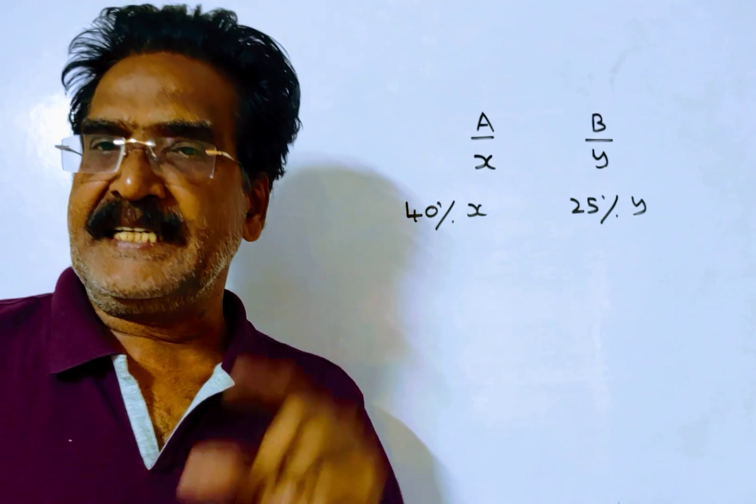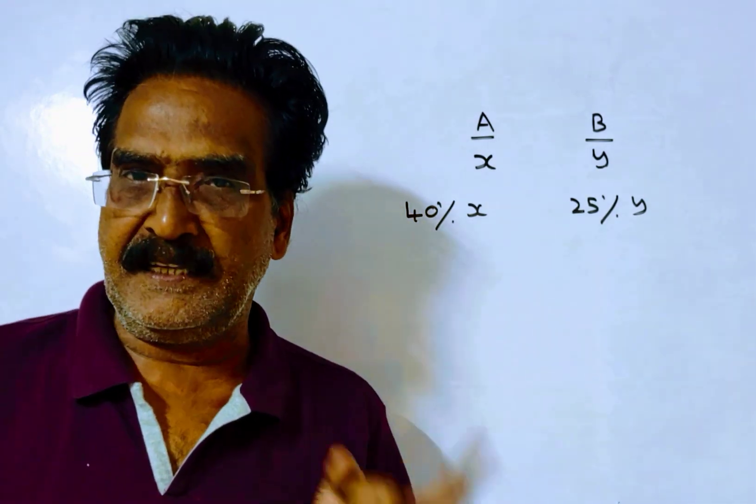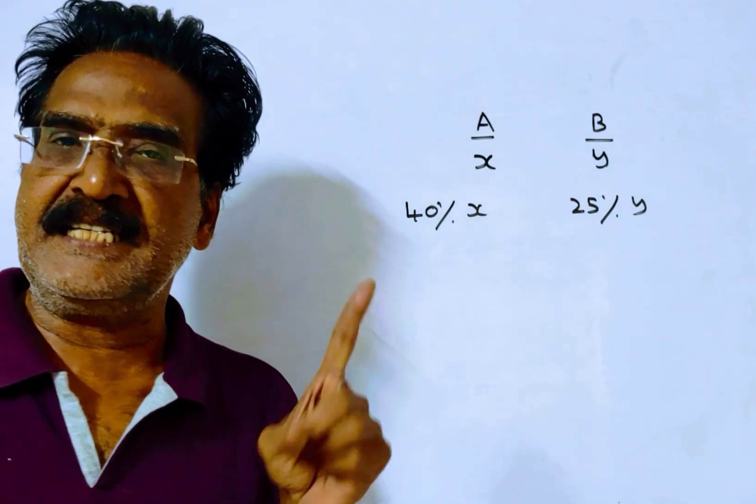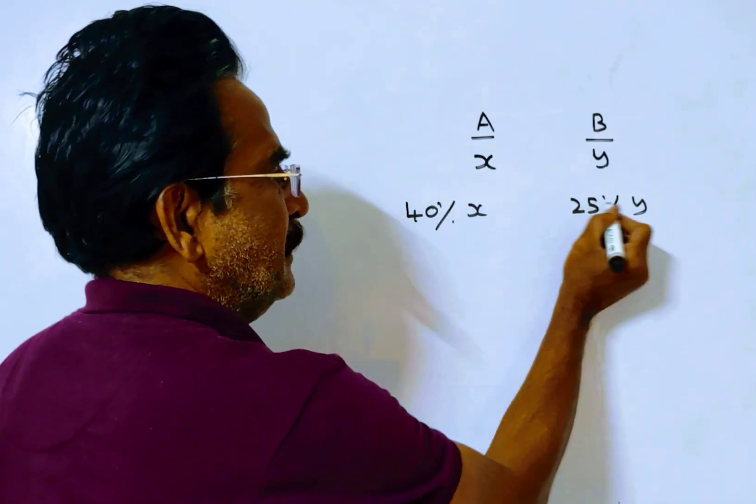Friends, now it is given that A's savings is 20% more than B's savings. That implies A's savings is equal to 120% of B's savings. Percent gets cancelled.